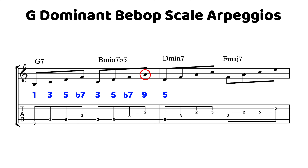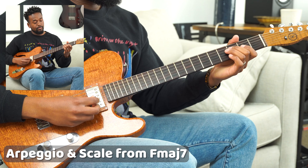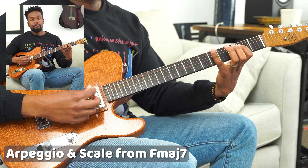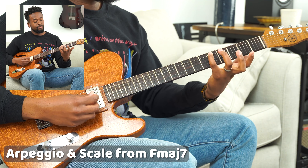Off of the fifth, we have D minor 7 — that's the fifth, flat 7, 9th, and 11th, or D, F, A, and C. Then off the flat 7, I have F major 7 — that's the flat 7, 9, 11, and 13: F, A, C, and E. You can create simple bebop lines by connecting the arpeggios to the scale. We want to do arpeggio ascending and the scale descending. Here's how that sounds from F major 7, here's from D minor 7, from B minor 7 flat 5, and then from G7.